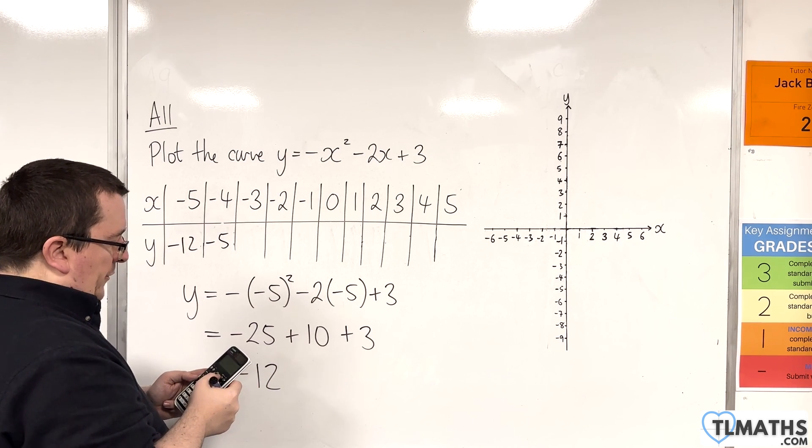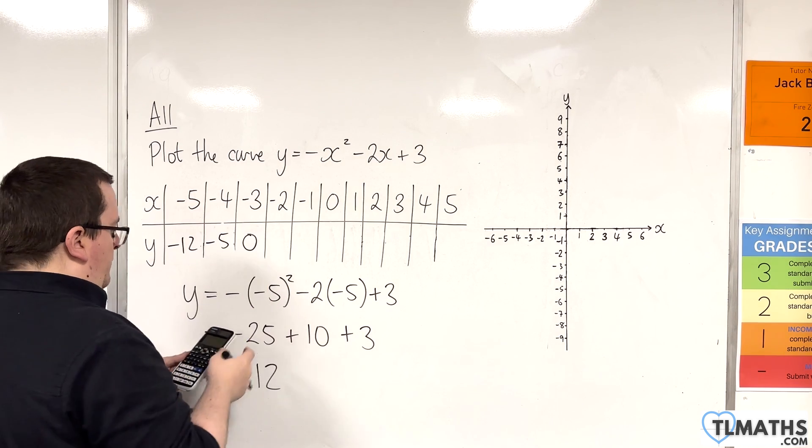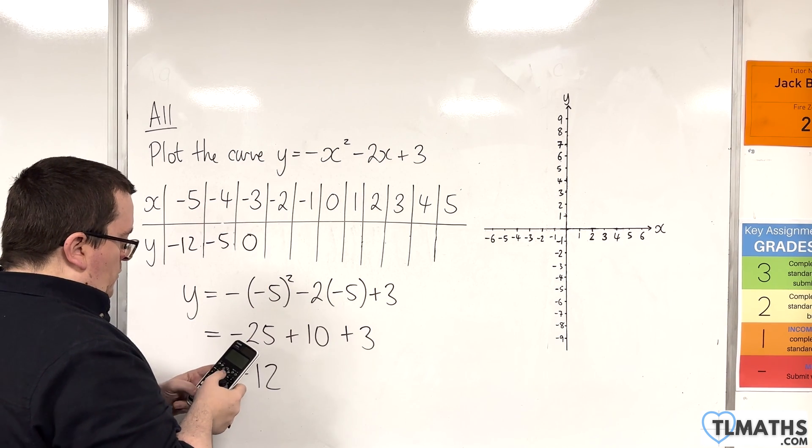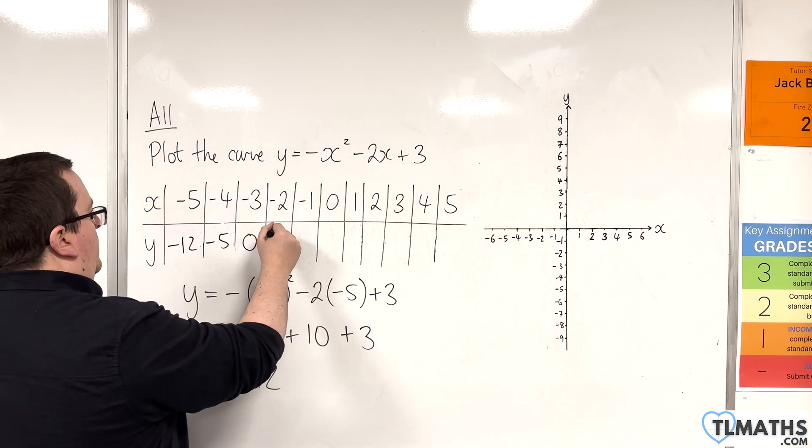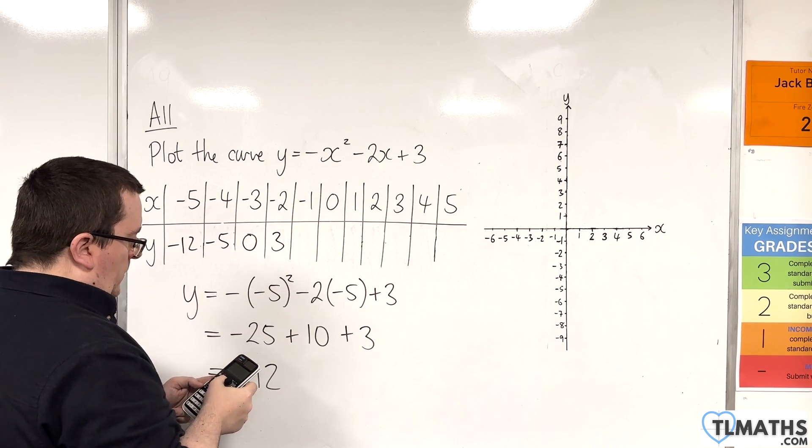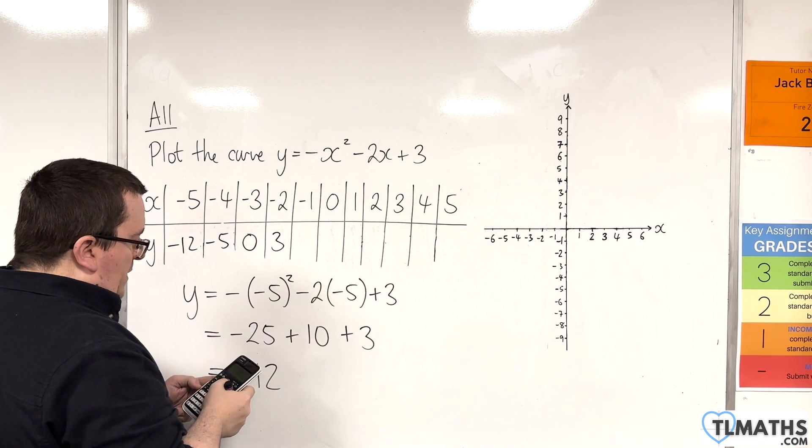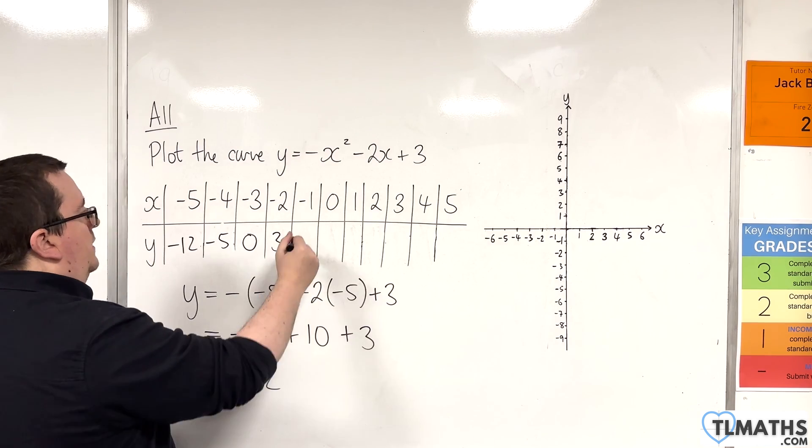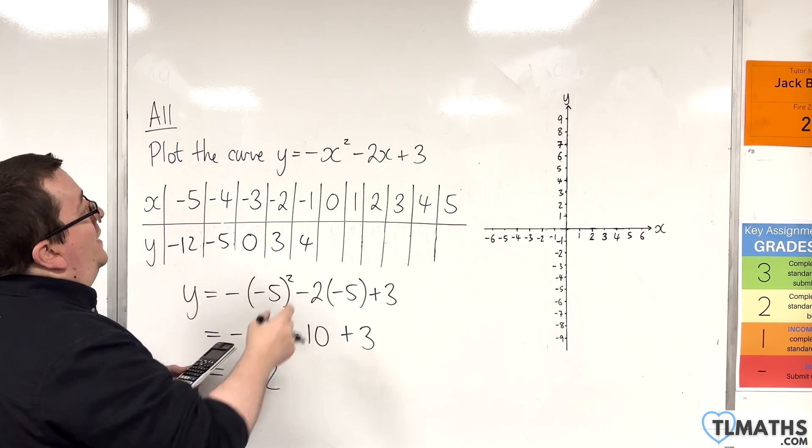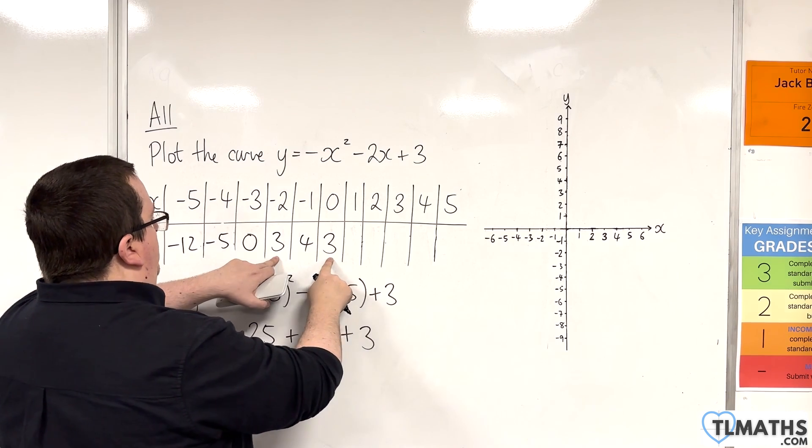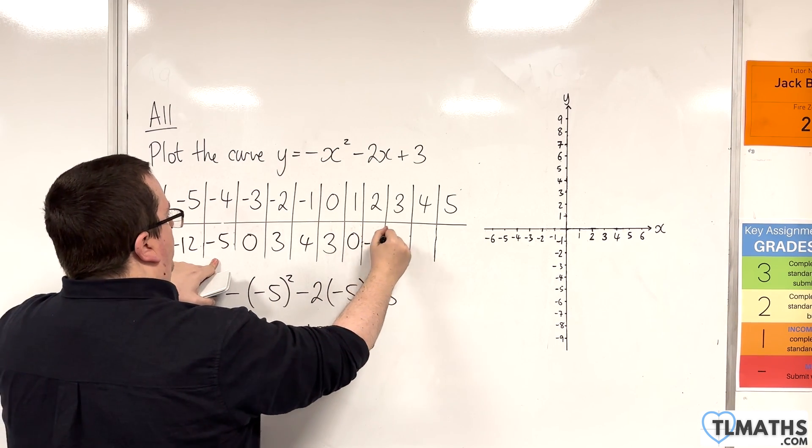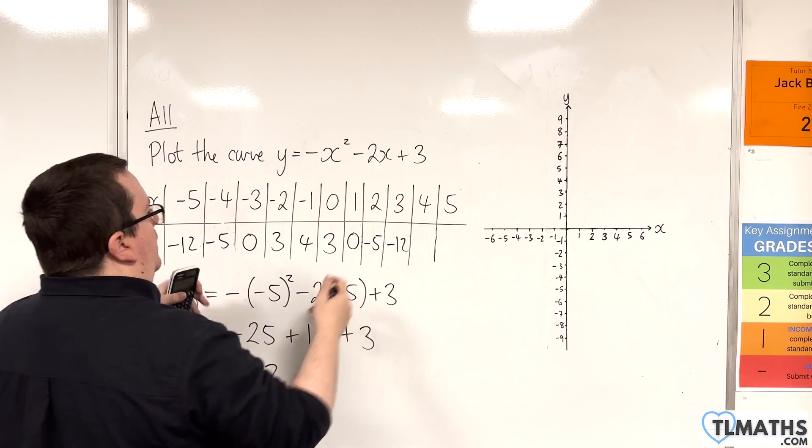Then when x is minus 3, I get 0. When x is minus 2, I get 3. When x is minus 1, I get 4. When x is 0, I'm going to get 3. So there's my symmetry. So then 0 minus 5 minus 12.